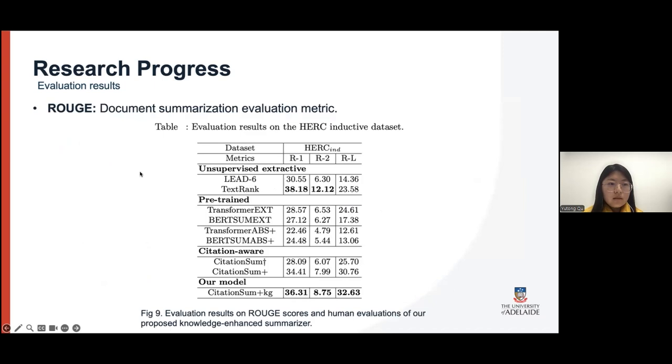This is the evaluation results table of our proposed architectures. We use the ROUGE as the metric because it is a commonly used evaluation metric for document summarization. From this table listing our experimental results, you can see that our knowledge-enhanced model achieved higher ROUGE scores compared to most baseline models, which indicates the effectiveness of using such knowledgeable information, knowledgeable graphs.